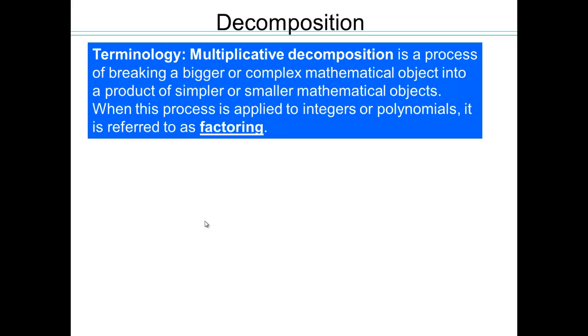Multiplicative decomposition is the process of breaking a bigger or complex mathematical object into a product of simpler or smaller mathematical objects. This process, when we apply it to whole numbers, polynomials, or integers, is called factoring.